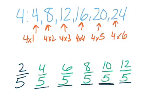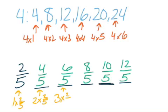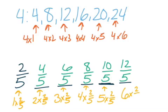Just like we did with our whole number multiples, we need to think about multiplication. To get to 2 fifths, I multiplied 1 times 2 fifths. When I got to 4 fifths, I multiplied 2 times 2 fifths. 6 fifths is 3 times 2 fifths. 8 fifths is 4 times 2 fifths. 10 fifths is 5 times 2 fifths. And 12 fifths is 6 times 2 fifths.